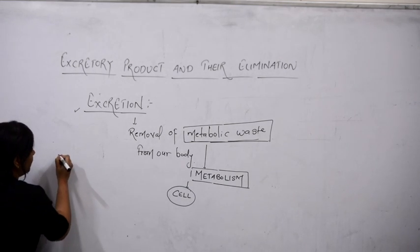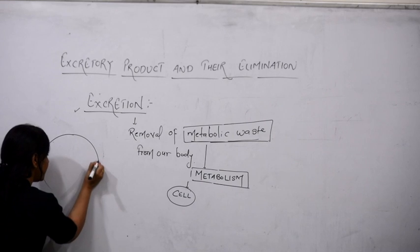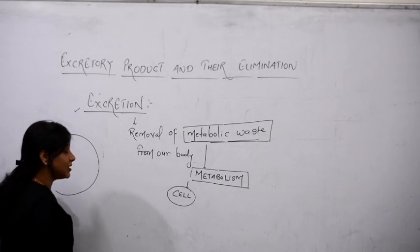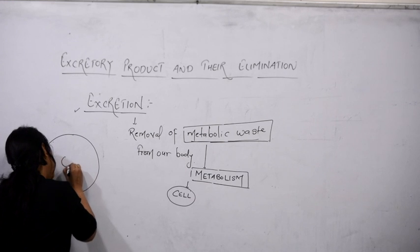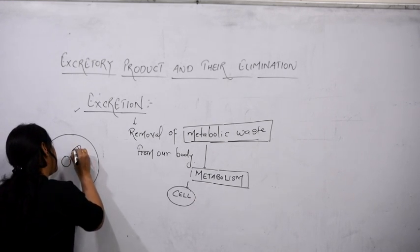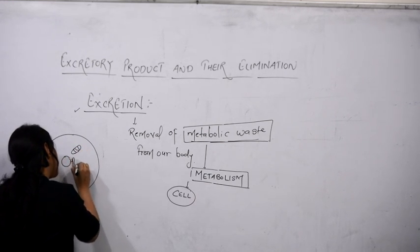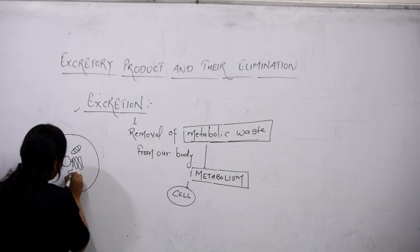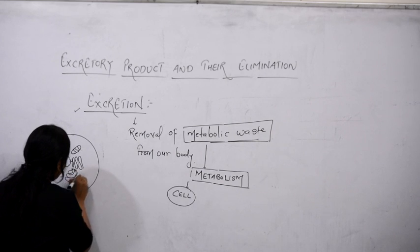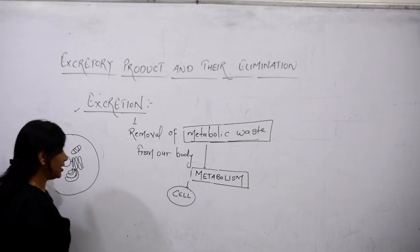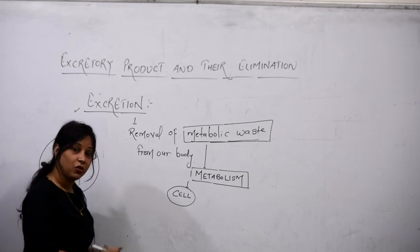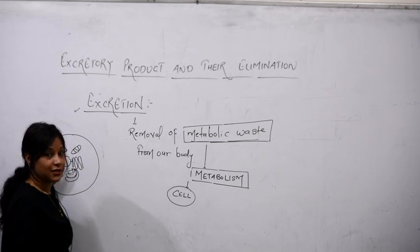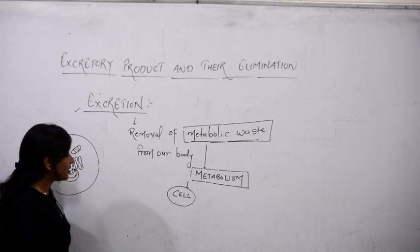If I draw the diagram of a cell — this is the cell, and different organelles are present inside it. This is the nucleus, this is the mitochondria, here is the endoplasmic reticulum, and the Golgi bodies are present here. A number of organelles are present inside the cell. As we know, organelles are the small subcellular structures present inside the cell, and each performs its own basic function.